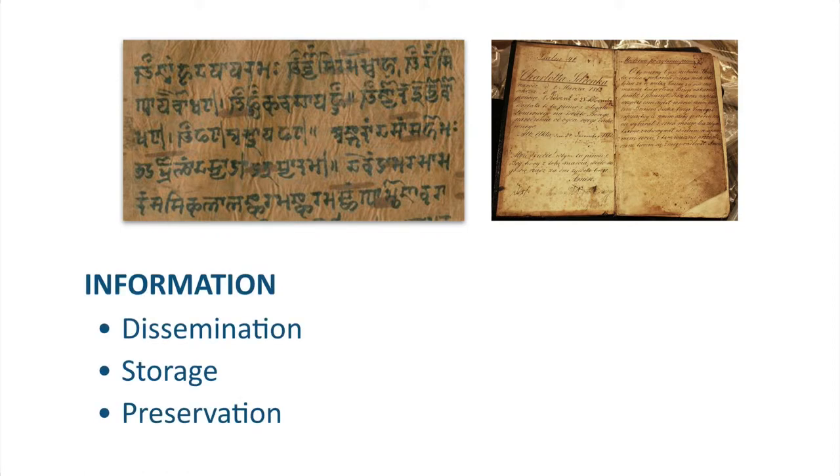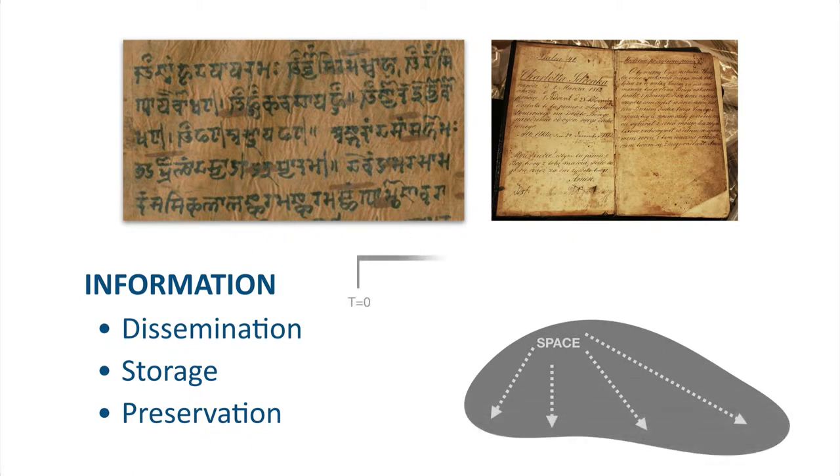Writing, first on bark of a tree and much later on paper, helped dissemination, storage, and preservation of information. Writing can go across space and be preserved across time, though with some difficulty. For example, not many manuscripts from earlier times have survived.